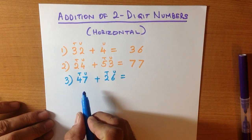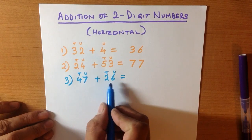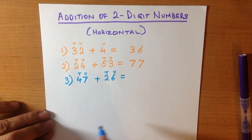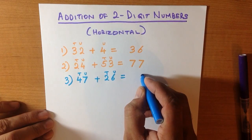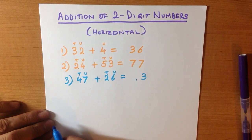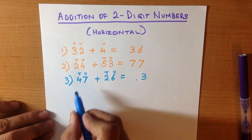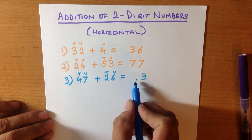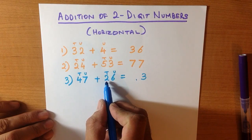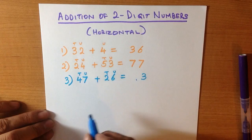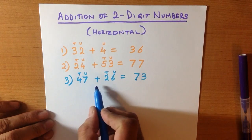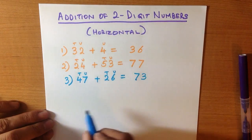Adding the units together, what is 7 plus 6? 7 plus 6, that's right, it's 13. So we put the 3 here and let's just put a small mark for the 1. Now we add the tens together. 4 plus 2, and don't forget the 1 over here. 4 plus 2 is 6, 6 plus 1 is 7. So 47 plus 26 is 73.